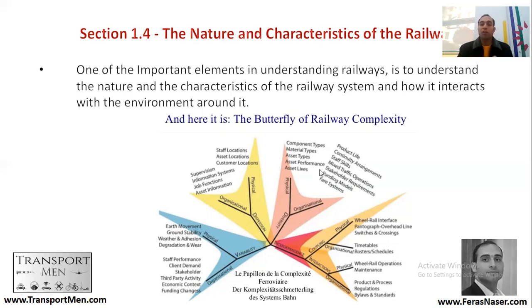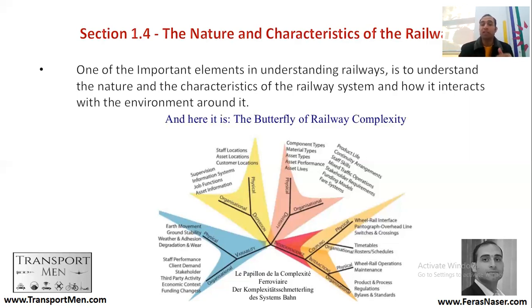To understand this complexity, we can think of four aspects. The first is variability — there is variability at both organizational and physical levels. For example, staff performance and client demand are variable, while physical earth movement and ground stability vary from one place to another.